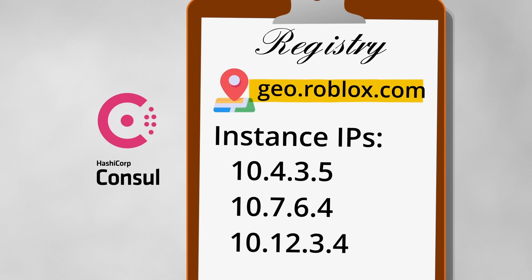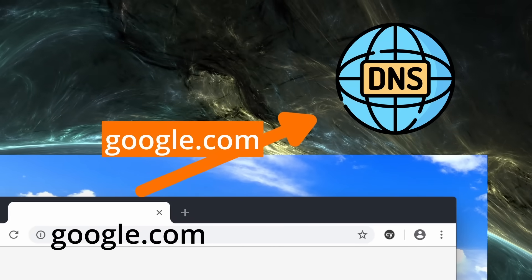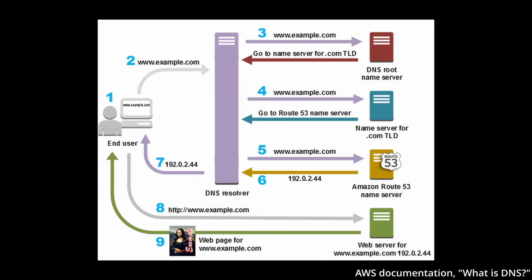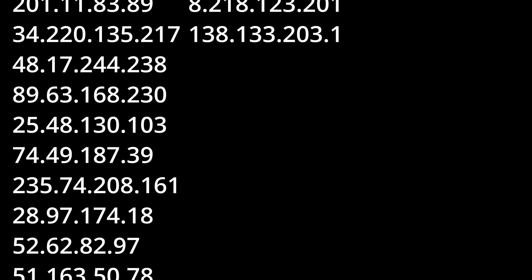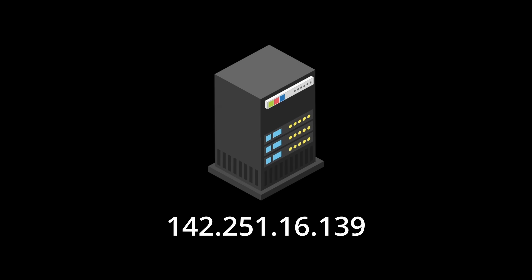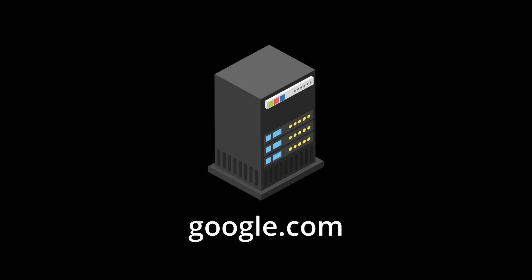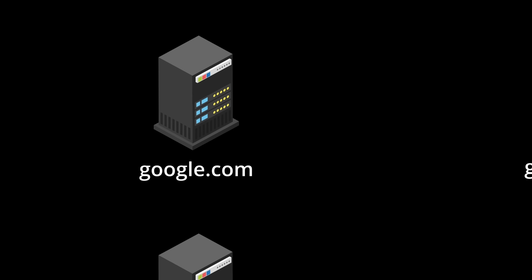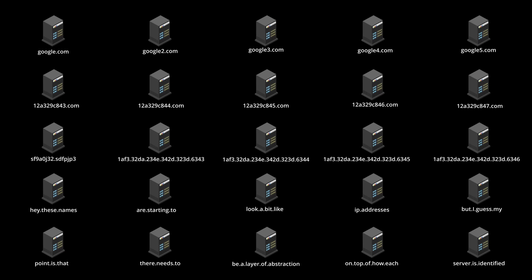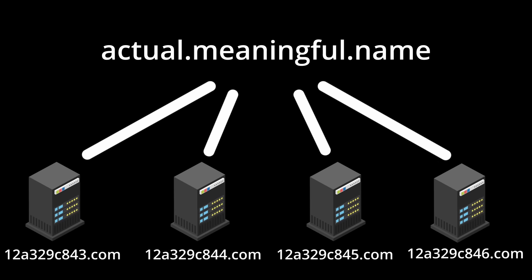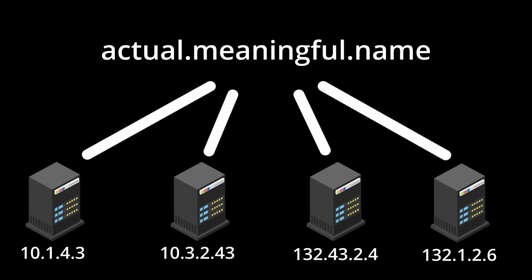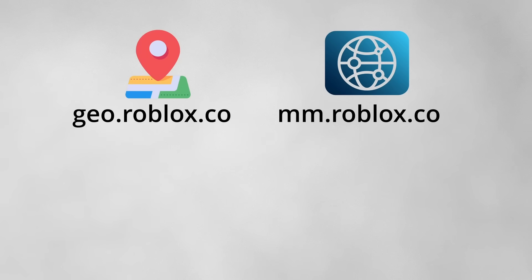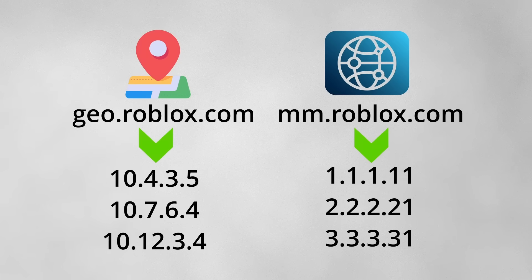Consul then uses DNS to map the service name to its IPs. DNS is what converts the domain name to an IP — the internet would be hard to use if everyone had to memorize a bunch of random IPs. So for each service, Consul provides a service-specific domain name which resolves to the set of healthy IP addresses.